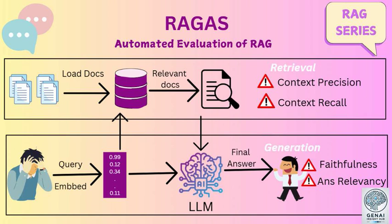Those sound important — can you break them down? Let's start with faithfulness. Think of it like checking if a journalist is accurately quoting their sources. Faithfulness ensures that the AI's answer stays true to the information it retrieved. We don't want the AI twisting the facts or making things up, which is a real concern with these powerful language models. So it's like a built-in lie detector for AI.